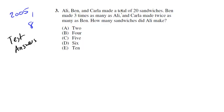Allie, Ben, and Carla made a total of 20 sandwiches. Okay, so we know that there are 20 sandwiches. Notice, I'm not reading this at once, I do read it once, but I also want to break it down sentence by sentence. So first sentence, Allie, Ben, and Carla made a total of 20 sandwiches. Ben made three times as many as Allie, and Carla made twice as many as Ben. Okay, so Ben is three times Allie, Carla two times Ben.